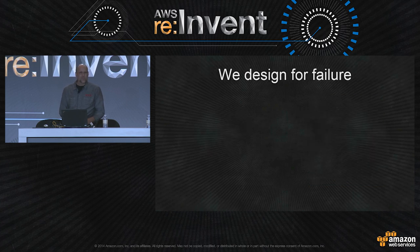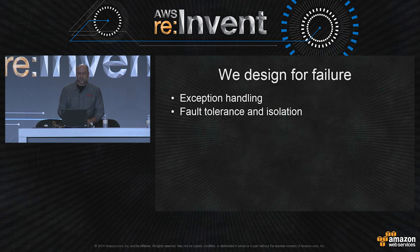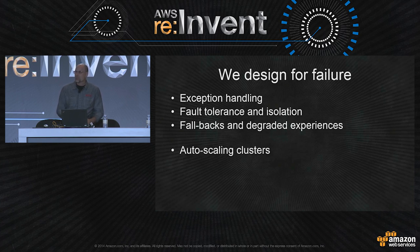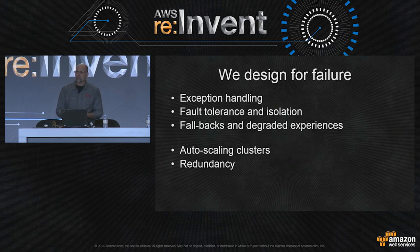In response to that, we design for failure. We plan for it and do basic things like exception handling. We design for fault tolerance and isolation — if we have services depending on other services, we try to isolate those services from breakage. We have fallbacks and degraded experiences so that if a service is unavailable, we can still provide an experience for our customers. We do auto scaling to deal with unexpected waves of traffic or bugs that degrade performance. And we rely on redundancy — a good use case is Cassandra, which we use for most of our database storage, with redundant data replication so if we lose a node we can still serve requests.